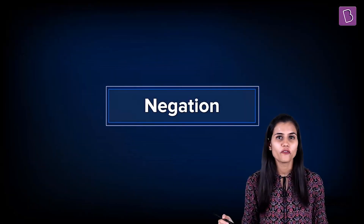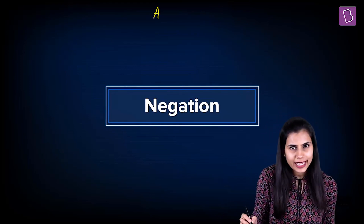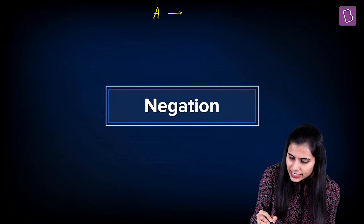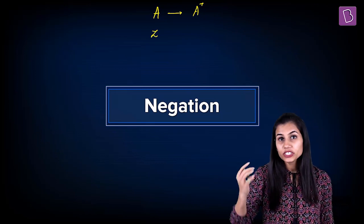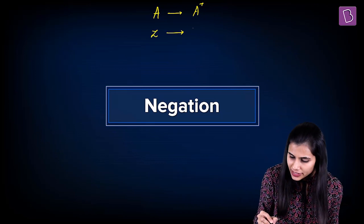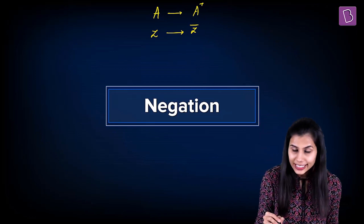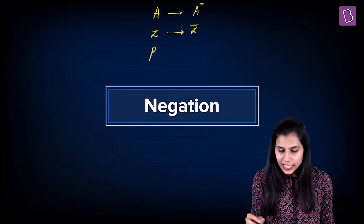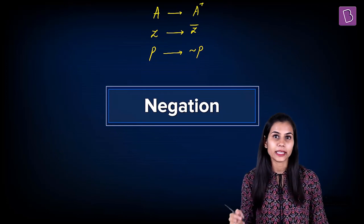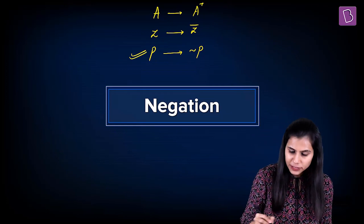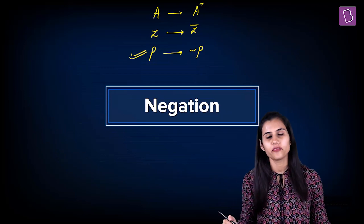Let's talk about negation of a statement. Just like corresponding to any matrix A, there exists its transpose called A transpose, and just like corresponding to any complex number Z, there exists its conjugate Z bar — similarly, corresponding to any statement P, there exists its negation P, denoted by tilde P. Whatever is the assertion made by statement P, negation P is the denial of that assertion.